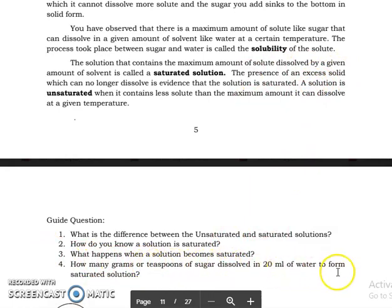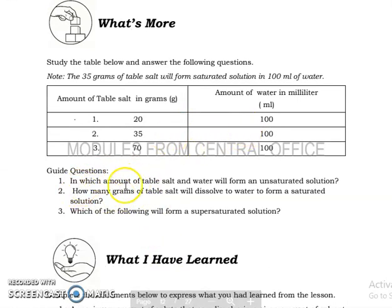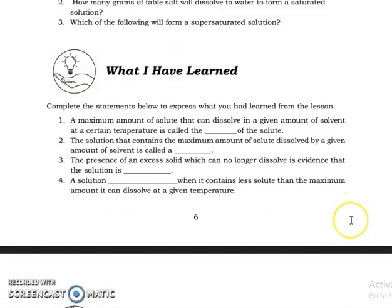So how many grams or teaspoons of sugar dissolve in 20 ml of water to form saturated solution? For this question it depends on the experiment you perform. So perform the experiment. Next, in which amount of table salt and water will form an unsaturated solution? Unsaturated, that's 20 grams salt or table salt. How many grams of table salt will dissolve in water to form a saturated solution? It says here 35 grams. Then which of the following will form a supersaturated solution? It's 70 grams table salt dissolved in 100 ml water, that's already supersaturated.